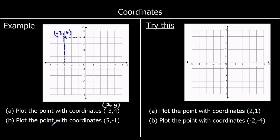The second one: plot the point with coordinates (5, negative 1). X first, so 5 on the x-axis and negative 1 on the y-axis. So that is the point with coordinates (5, negative 1).